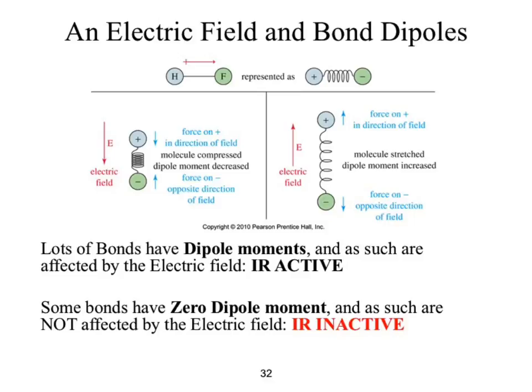Conversely, what if there was a huge dipole? No dipole means no signal. A large dipole — like the difference in electronegativity between carbon and oxygen — gives a massively intense signal. So there are ways that signals can be hidden in pretty much all of our spectra.